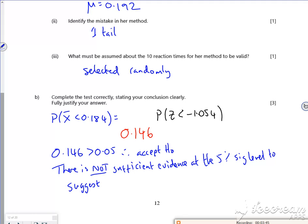Like the 5% significance level to suggest that her training time has reduced.